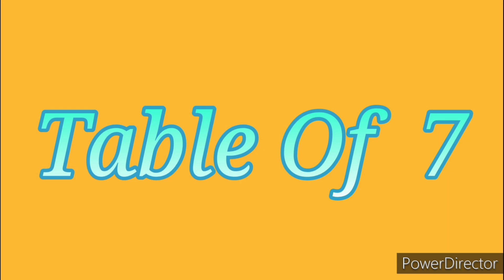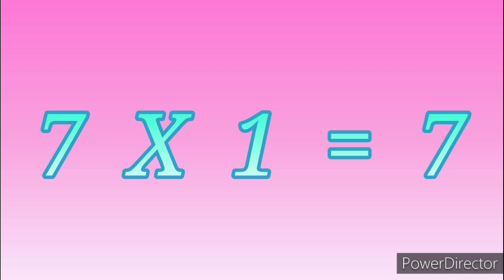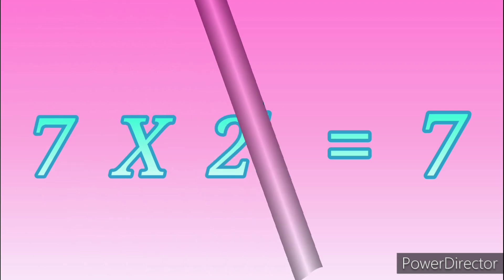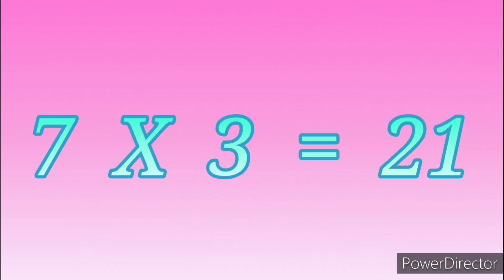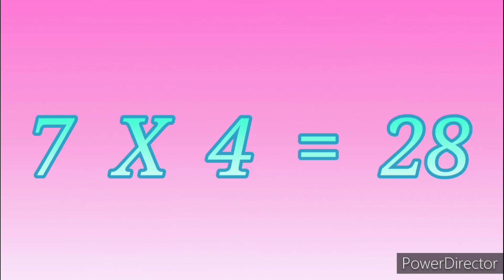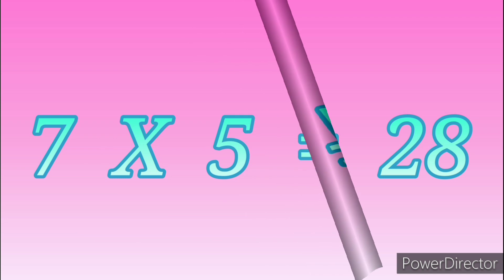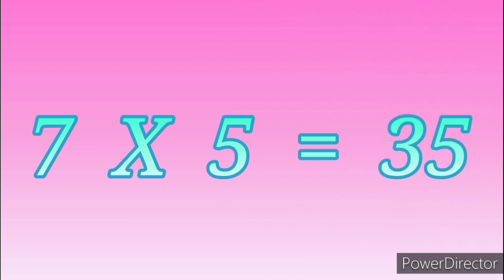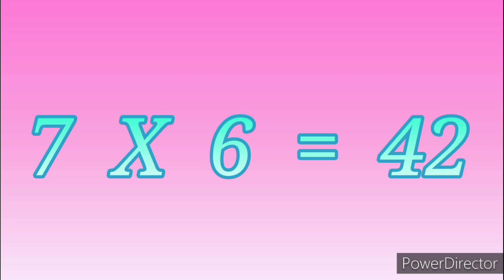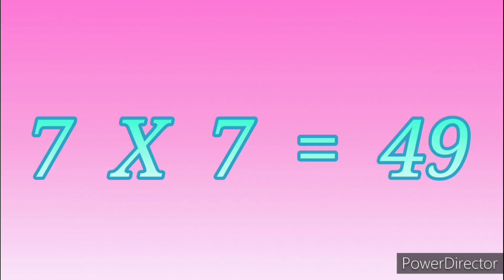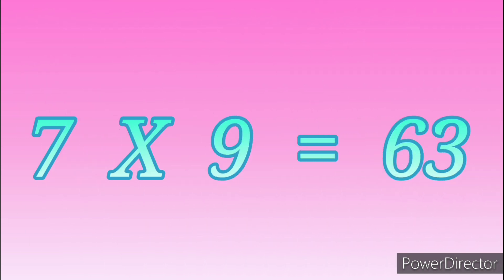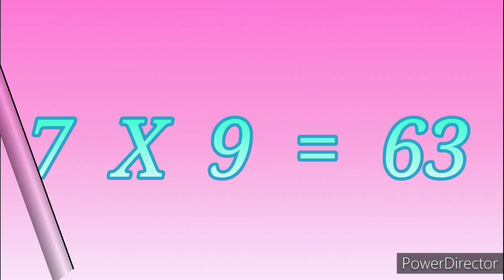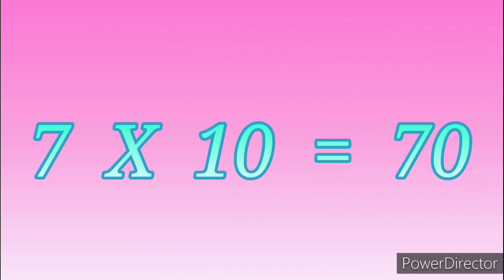Table of Seven. Seven ones are seven. Seven ones are seven. Seven twos are fourteen. Seven twos are fourteen. Seven threes are twenty-one. Seven threes are twenty-one. Seven fours are twenty-eight. Seven fours are twenty-eight. Seven fives are thirty-five. Seven sixes are forty-two. Seven sixes are forty-two. Seven sevens are forty-nine. Seven sevens are forty-nine. Seven eights are fifty-six. Seven eights are fifty-six. Seven nines are sixty-three. Seven nines are sixty-three. Seven tens are seventy. Seven tens are seventy.